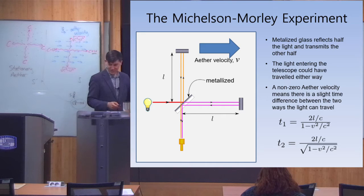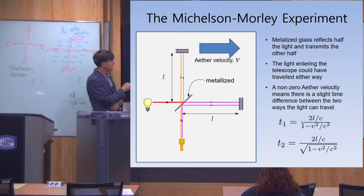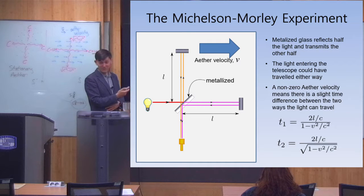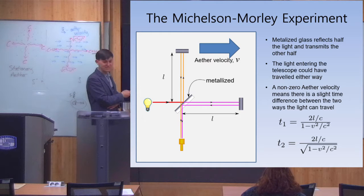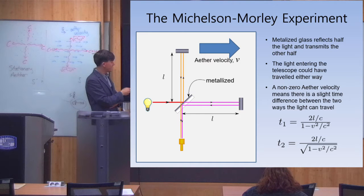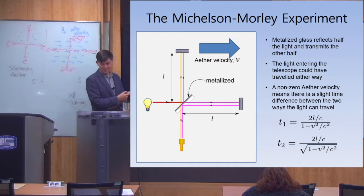Now imagine that the ether was moving. If the ether was moving as shown here, then the time it takes light to go along the purple path will be T1, and the time it takes along the orange path will be T2. We showed that T1 is a bit longer than T2, so the orange path will be a little bit faster.